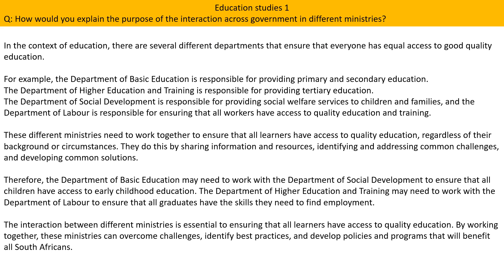In the context of education there are several departments that ensure that everyone has equal access to good quality education. For example, the Department of Basic Education is responsible for providing primary and secondary education. The Department of Higher Education and Training is responsible for providing tertiary education.